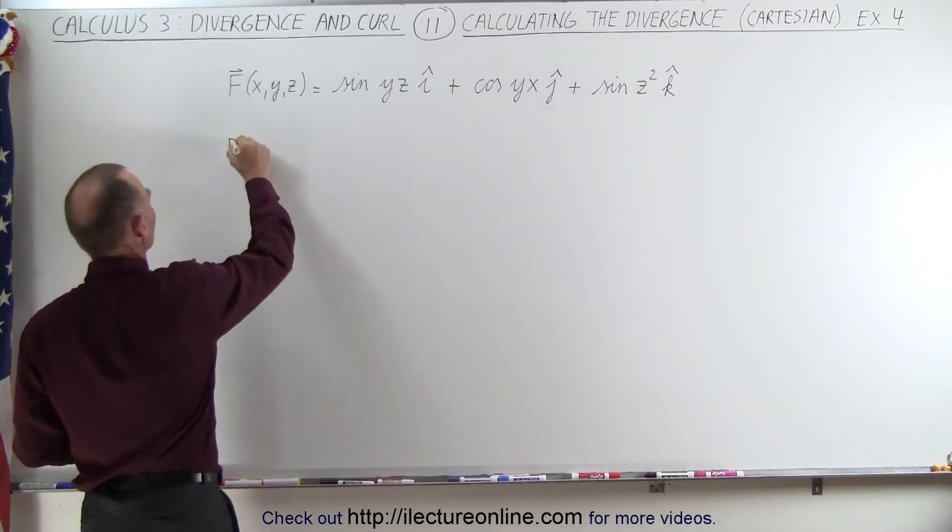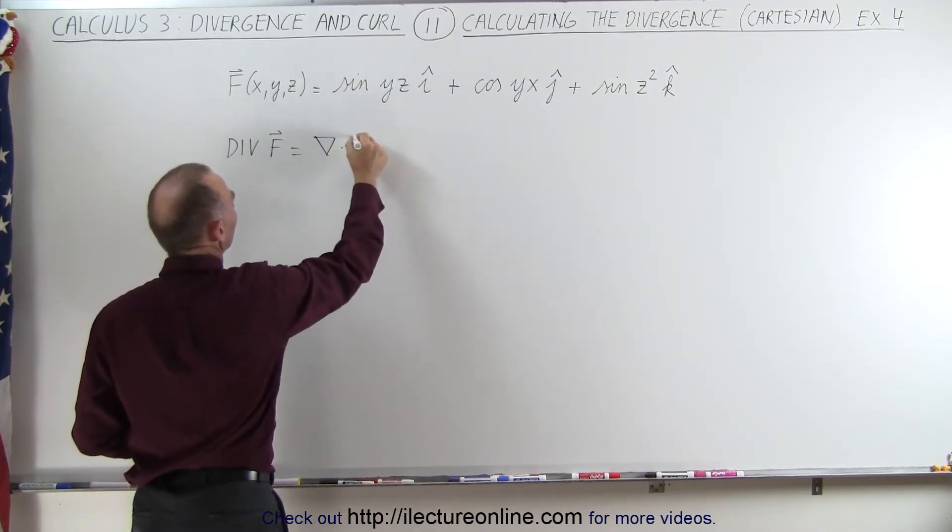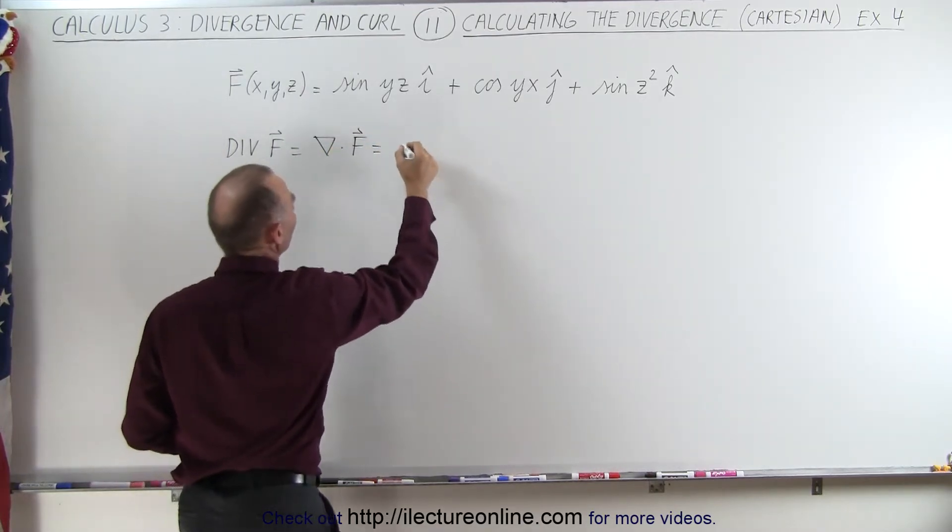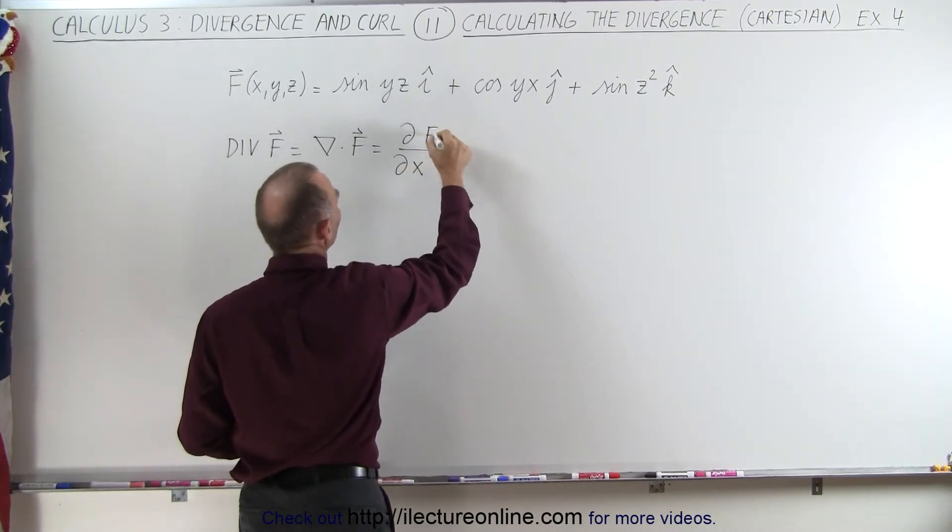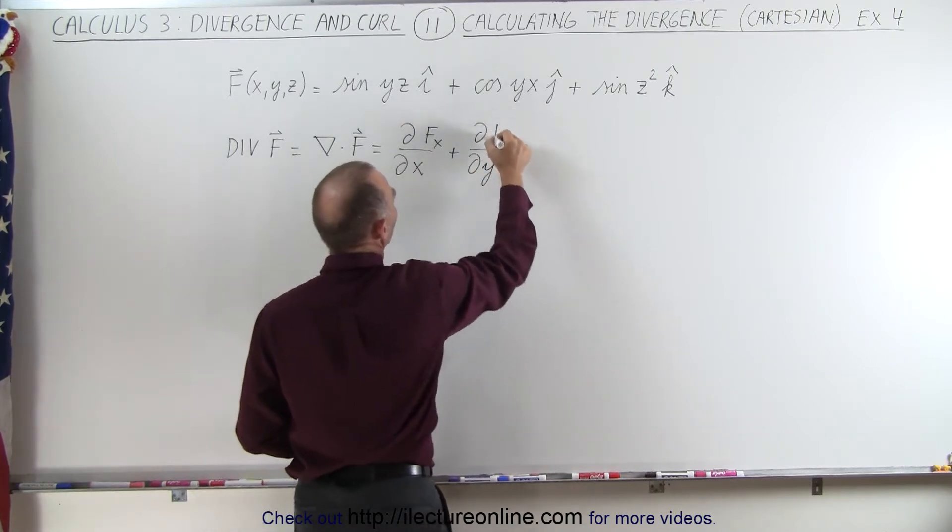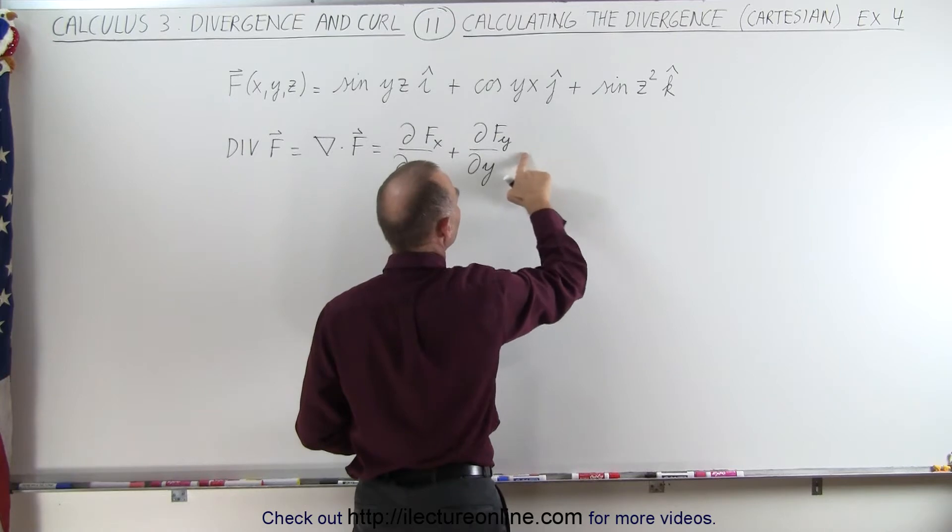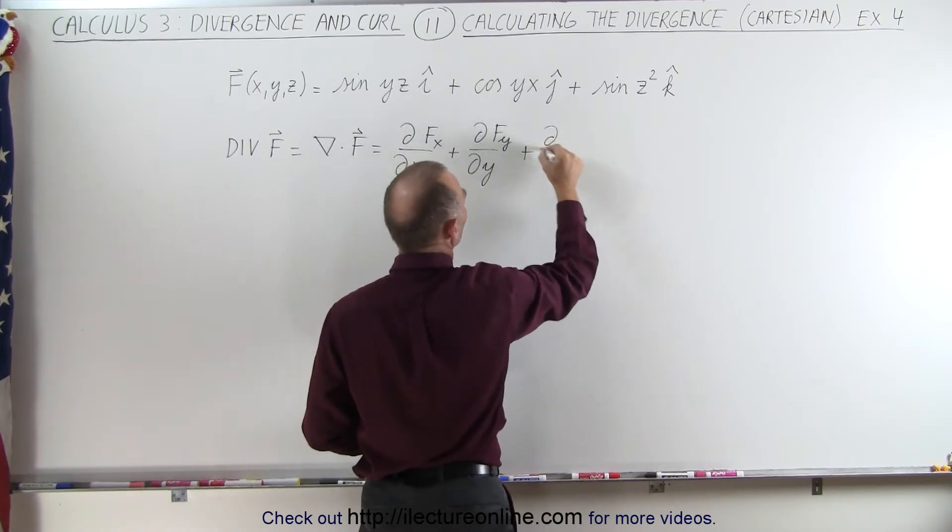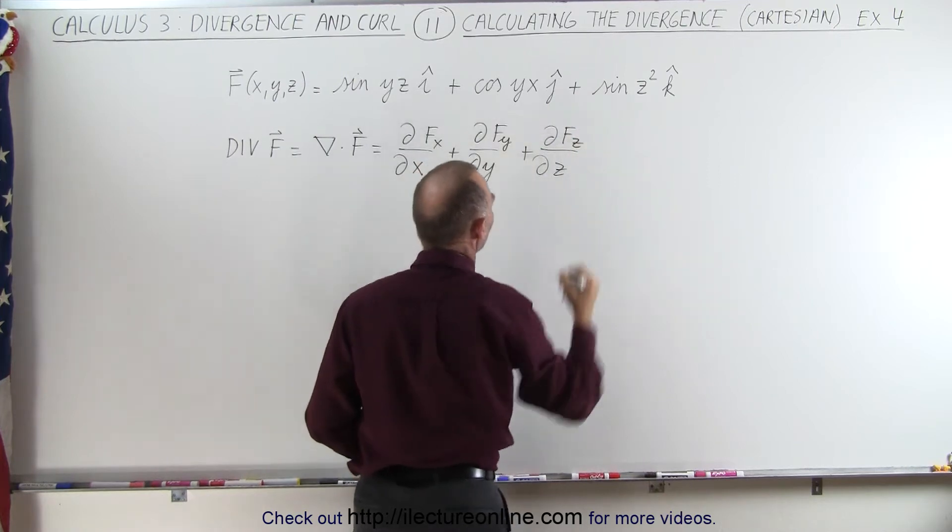The divergence of F, which we can write as DIV F, equals the partial derivative with respect to x of the x component plus the partial derivative with respect to y of the y component, plus the partial derivative with respect to z of the z component of the vector field.